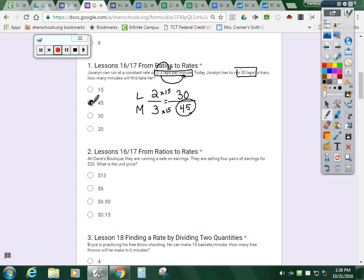Number two, at Claire's Boutique they're running a sale on earrings. They are selling four pairs of earrings for $26. What is the unit price? So I'm comparing pairs of earrings to money. Four pairs are going to be sold for $26. The unit rate is a fancy word for one. So they want to figure out how much it is per one pair of earrings.